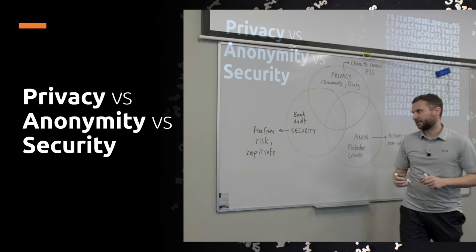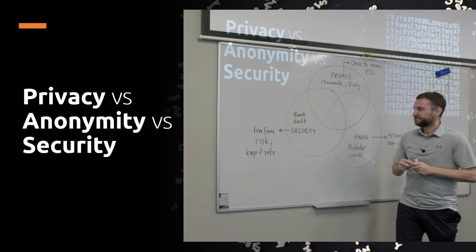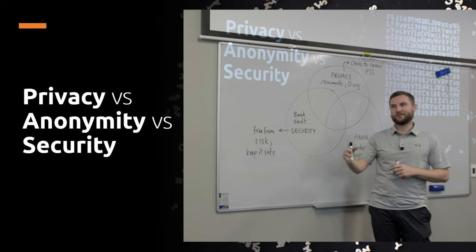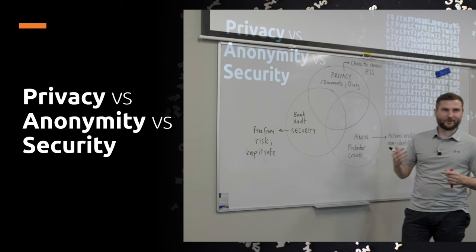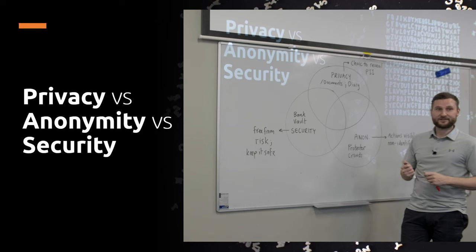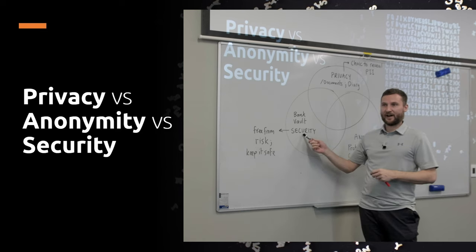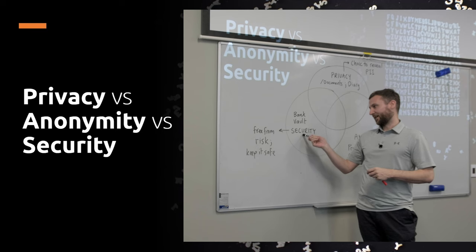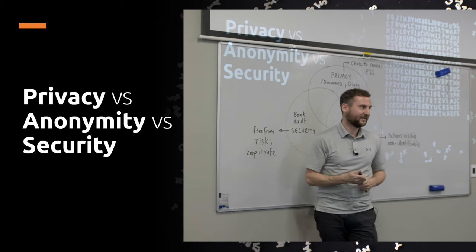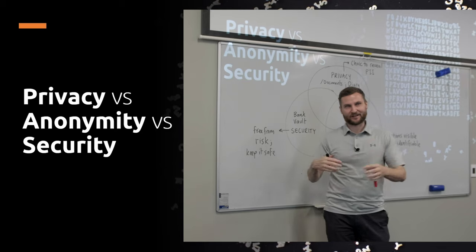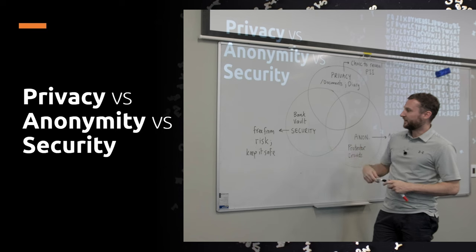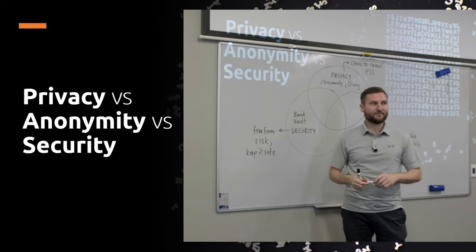A perfect analog example of security is the bank vault. You trust the bank to only let you in; the bank knows it's you so you're not anonymous, and the bank knows what's in the vault, so it's not private either. But it is secure, and banks are very good at security - that's sort of their primary business model. In a digital sense, security comes from encryption - something with well-established encryption that we can trust.